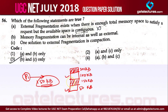We have a solution for external fragmentation and that is compaction. In compaction, what we do is we take the occupied area on the upper side or the lower side and take the unoccupied data to the lower side. So we can combine these unoccupied areas into one and then allocate.